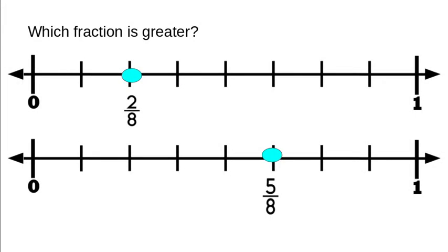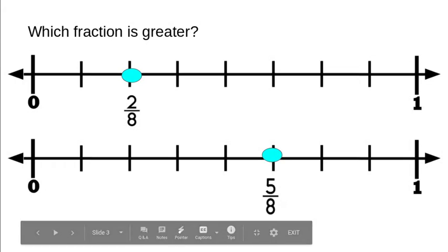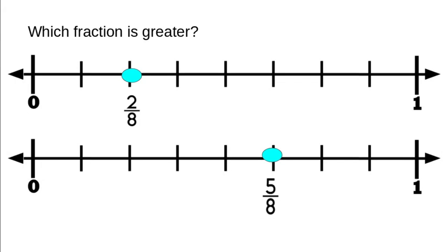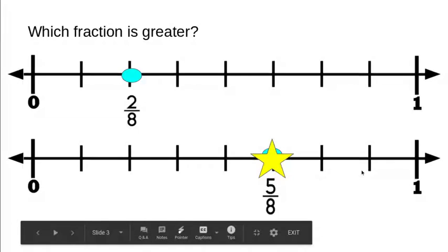Here again we have two number lines and they're both broken up into eighths. Our first number line has two eighths and our second number line has five eighths. The question is which one is greater — which one is closer to being a whole, closer to the number one on the number line? As an active learner, take an educated guess. If you said five eighths, you are correct. Five eighths is greater than two eighths — you can see that it is closer to the one.